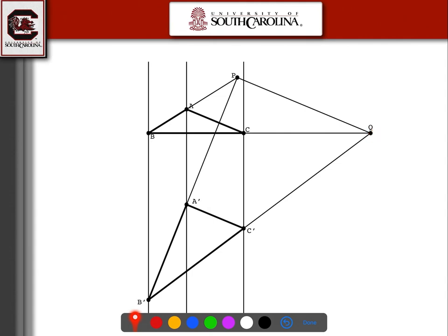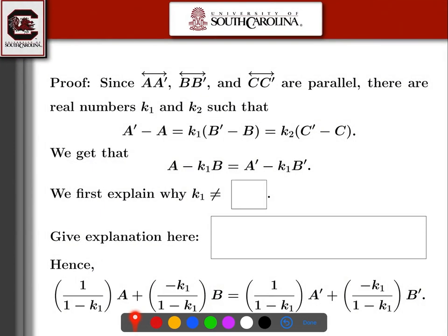This is going to be a fill-in-the-blank proof. We have these three lines, which we said were parallel. The vector from A to A' is parallel to this line, the vector from B to B' is parallel to this line, and the vector from C to C' is parallel to this line. Since these lines are parallel, these vectors are going to have to be parallel. If two vectors are parallel, that means they're multiples of each other. So AA' will be a multiple of BB' — for example, if K1 were two, that would tell us that vector AA' is twice as long as BB' and going in the same direction. These three vectors are just multiples of each other because the three lines are parallel.